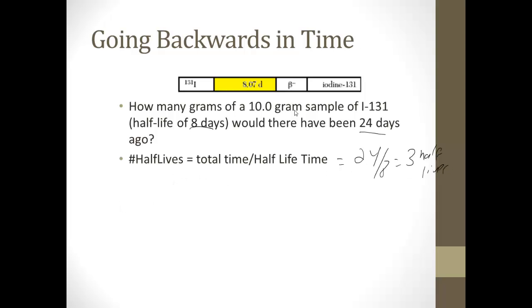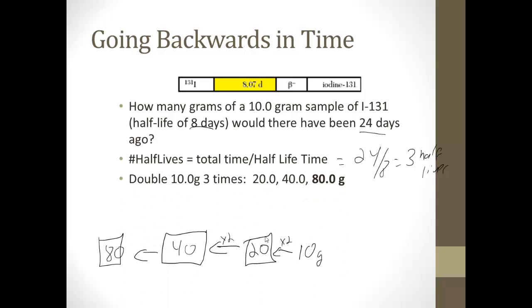So now we're going to double 10 three times. We're going backwards in time. So we have 10 grams now. One half-life, two half-lives, three half-lives. So we're going to double 10 times 2 three times. So 10 times 2 is 20. 10 times 2 is 40. 10 times 2 is 80. So we went 20, 40, 80 grams.